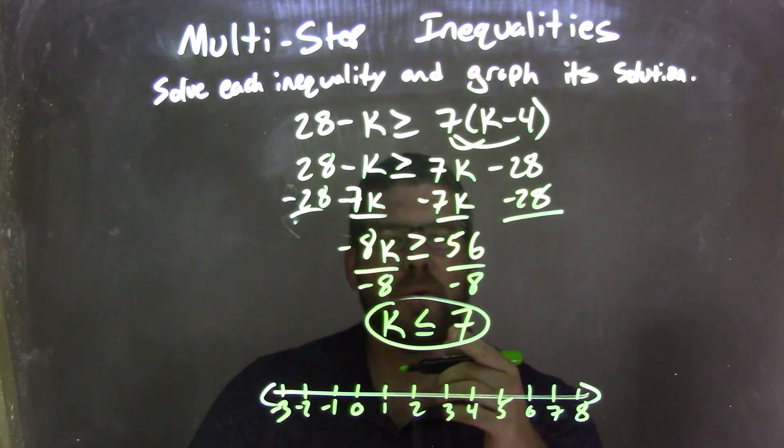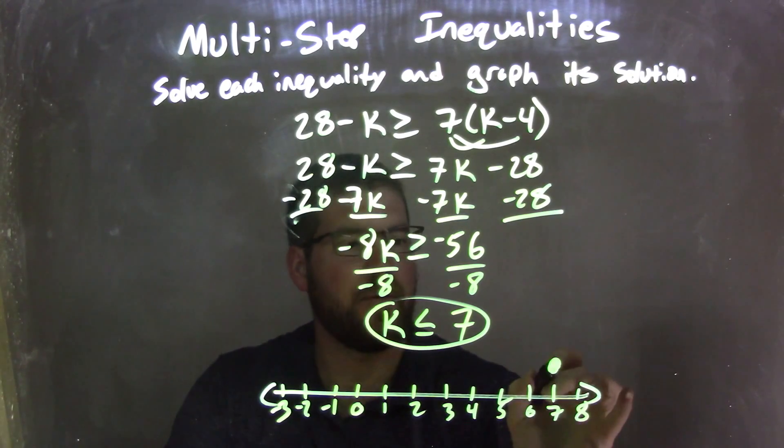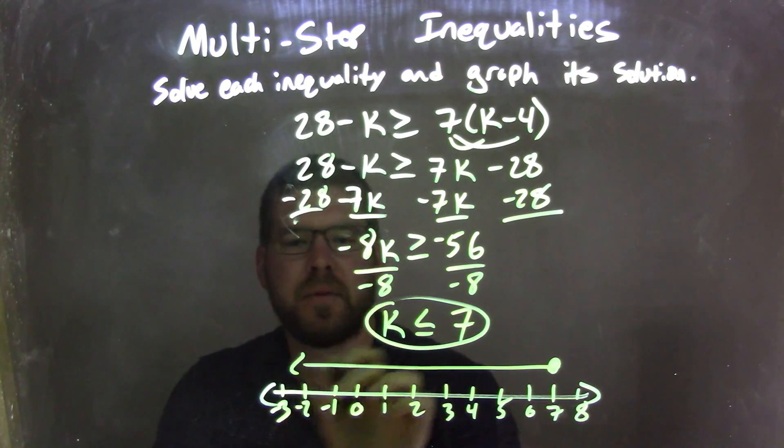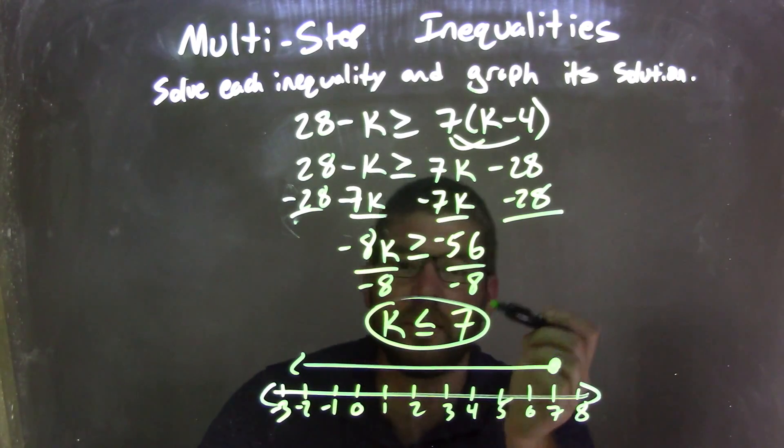We said that k was less than or equal to 7, so we have a closed circle here at 7. And then it's less than, so I'm going to make my arrow to the left here. Now we have a graph that matches our inequality, which is k is less than or equal to 7.